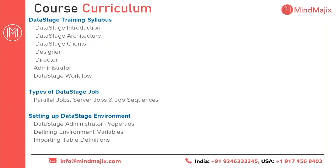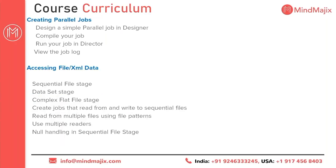In DataStage we have three types of job categories: parallel jobs, server jobs, and job sequences. All three concepts will be discussed in our training program. We'll also cover how to set up the DataStage environment, administration properties, how to create environment variables, how to import table definitions for sources and targets, and how to create parallel and server jobs.